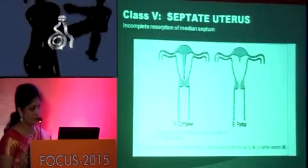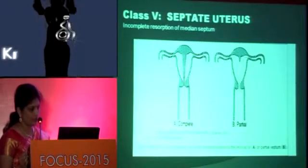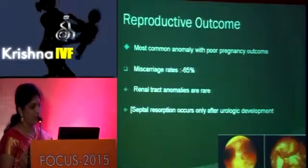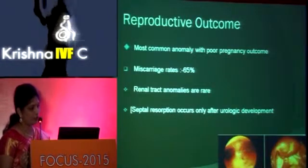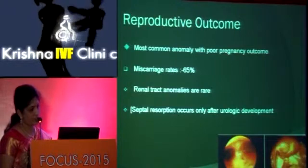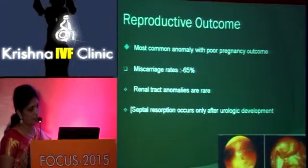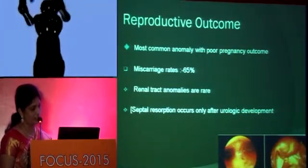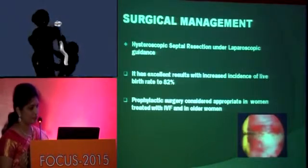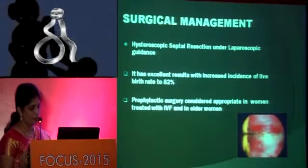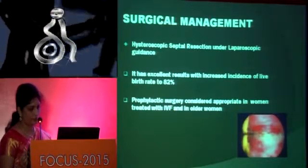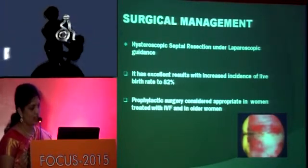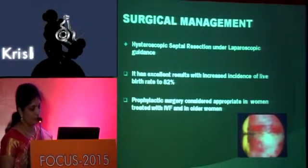Class 5 is the septate uterus, due to incomplete resorption of the median septum; it may be complete or partial. This is the most common anomaly with poor reproductive outcome and high miscarriage rates of 65%. Renal anomalies are rare because septal resorption occurs only after urological development is completed. Surgical management is hysteroscopic septal resection under laparoscopic guidance, with excellent results — live birth rate increased to 82% and decreased miscarriage rate. Prophylactic surgery is considered appropriate in women treated with IVF and in older women.